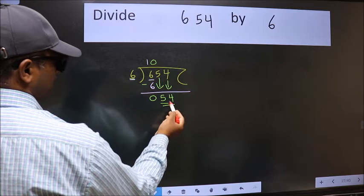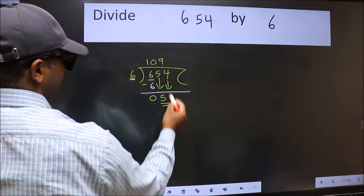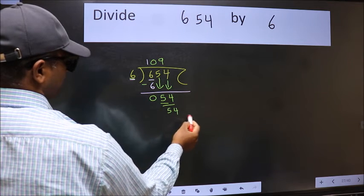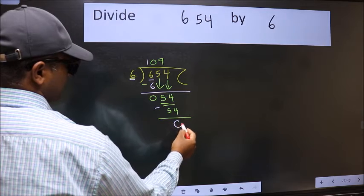Now, 54. When do we get 54 in 6 table? 6 nines, 54. Now, we should subtract. We get 0.